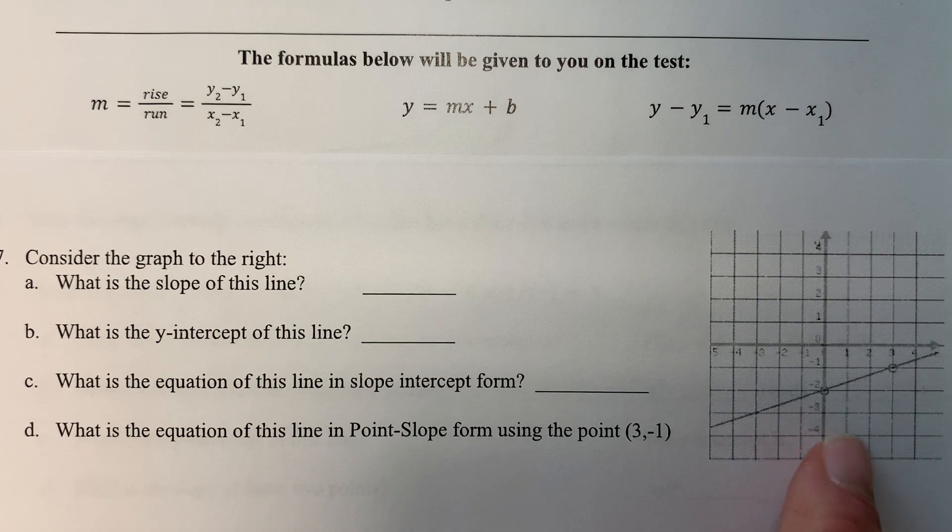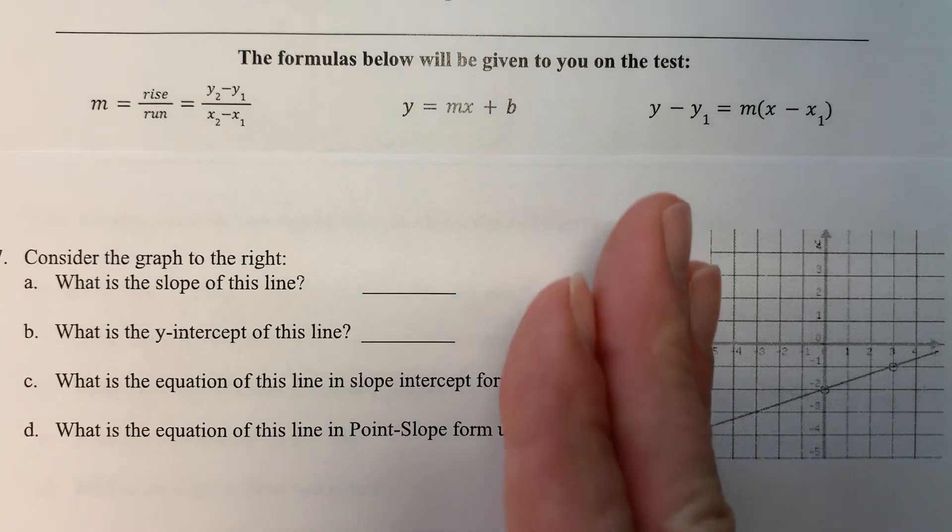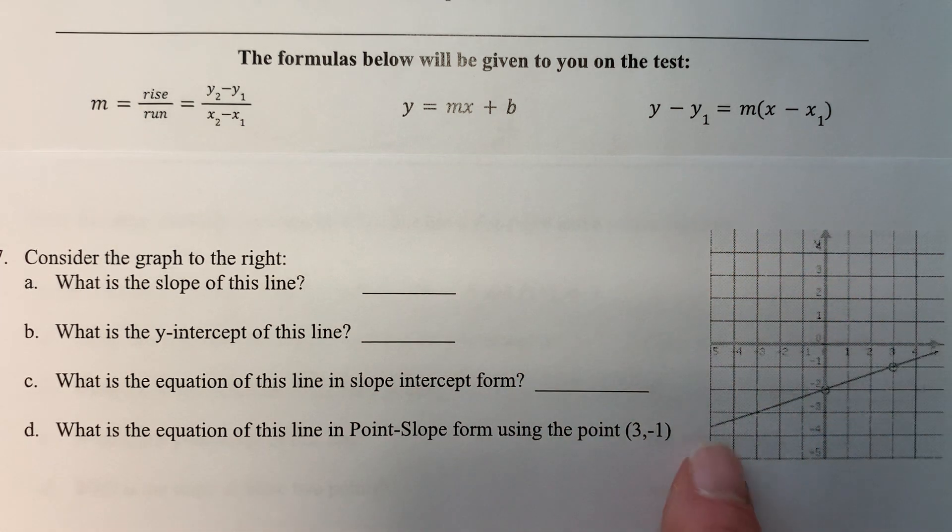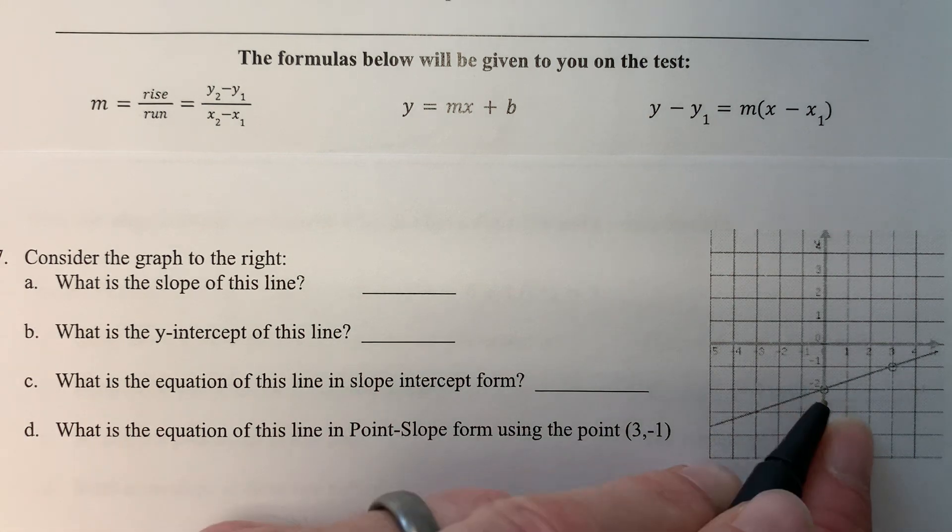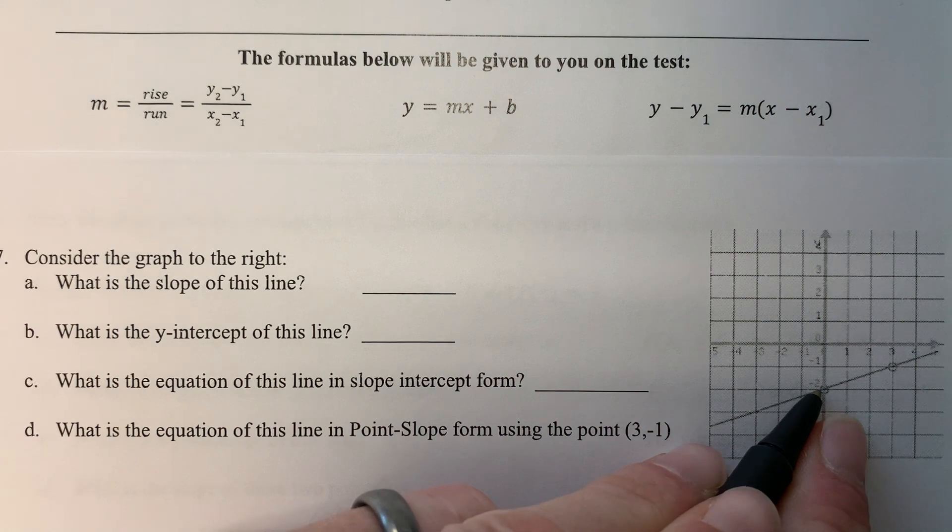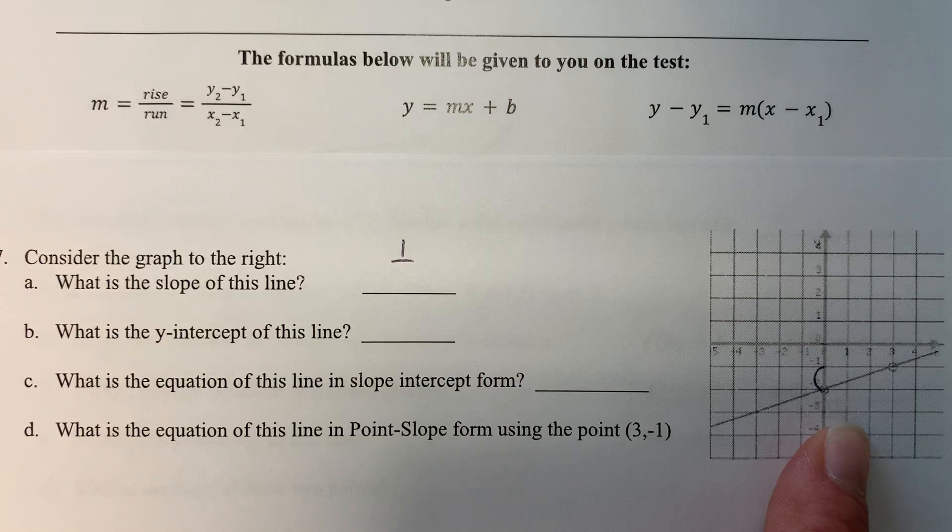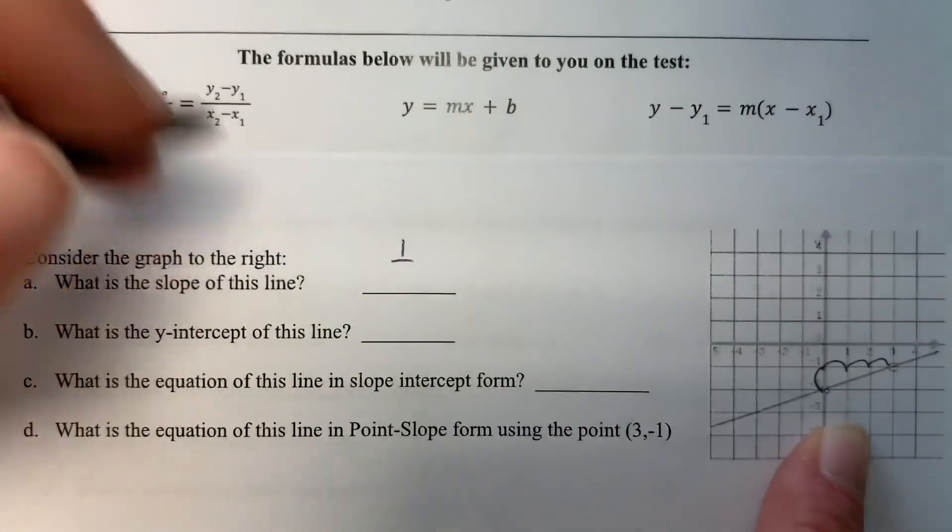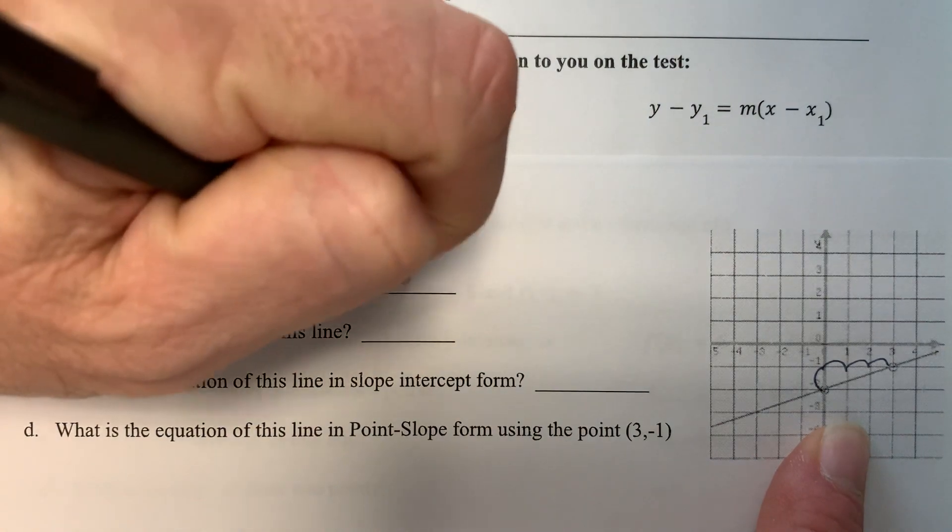and do our rise over run. If we were reading it like a book, we would find this point first. I'll put my pen right there; you'll use a pencil. Our rise will be to go up one, so our slope will have a rise of one. Then for the run, we go to the right one, two, three. The run goes on the bottom, so this will have a slope of one-third.